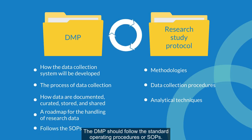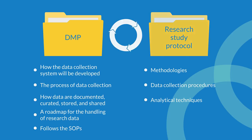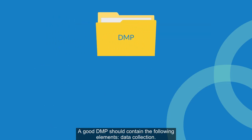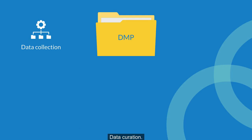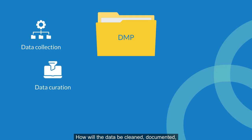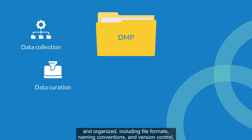The DMP should follow the standard operating procedures, or SOPs. A good DMP should contain the following elements. Data collection: what is the source of your data, in what formats, and how much data will be produced? Data curation: how will the data be cleaned, documented, and organized, including file formats, naming conventions, and version control?